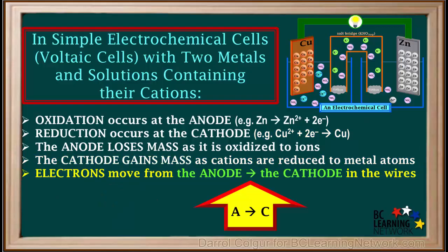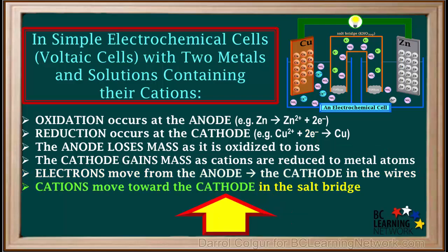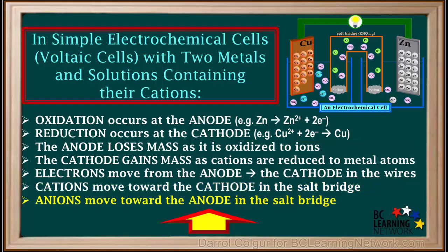Electrons move from the anode to the cathode in the wires, from A to C. This makes sense because electrons are lost by the anode and gained by cations at the cathode. Cations move toward the cathode in the salt bridge. Both words start with cat, cations and cathode. This makes sense because cations are produced at the anode and used up at the cathode. Anions move toward the anode in the salt bridge. Both anions and anode start with an.